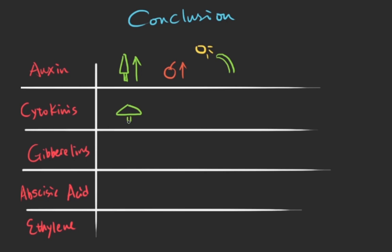Cytokinins promote cell division, make plants bushy, and keep plants young and fresh. Gibberellins trigger seed germination and give the plant longer stems. But too much gibberellins will make your plant turn yellow and tall and fruitless.